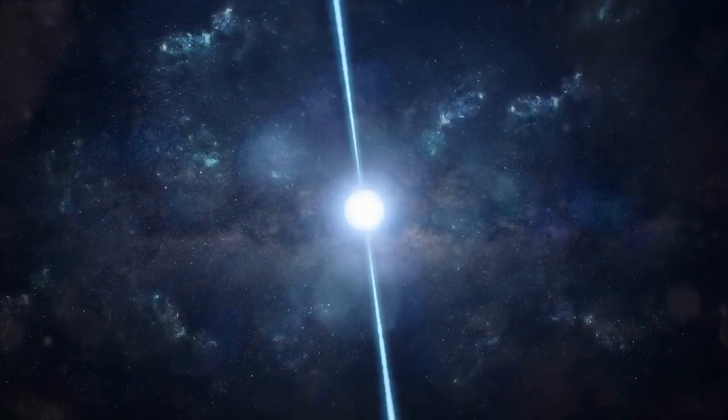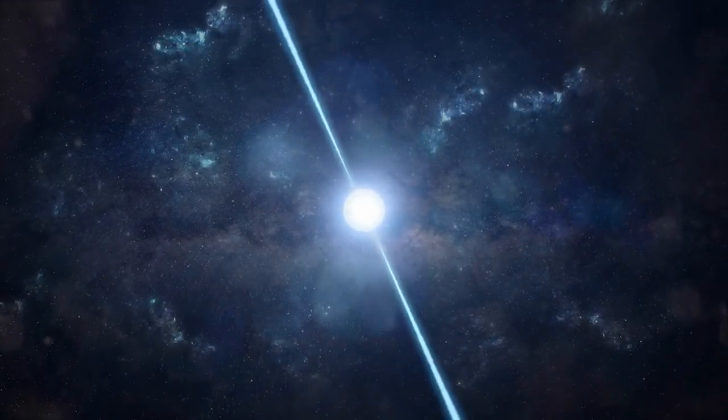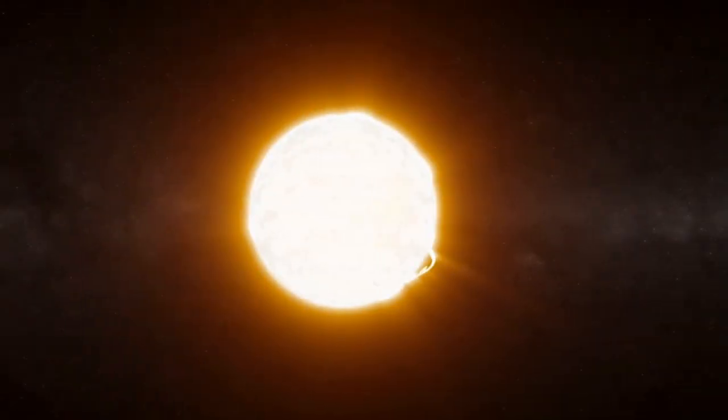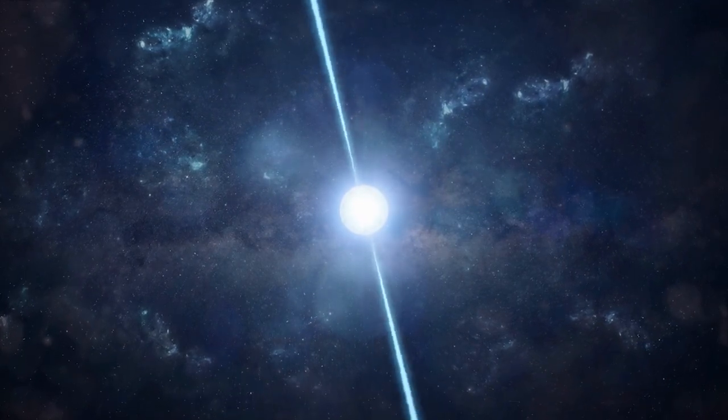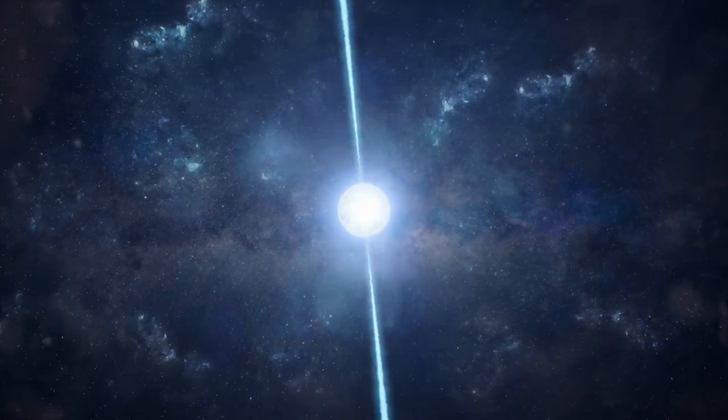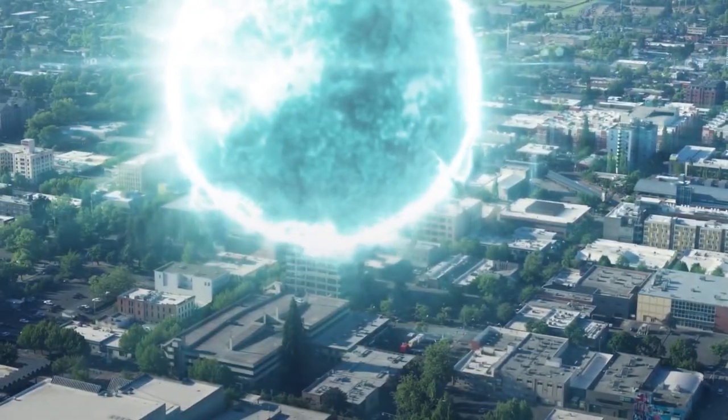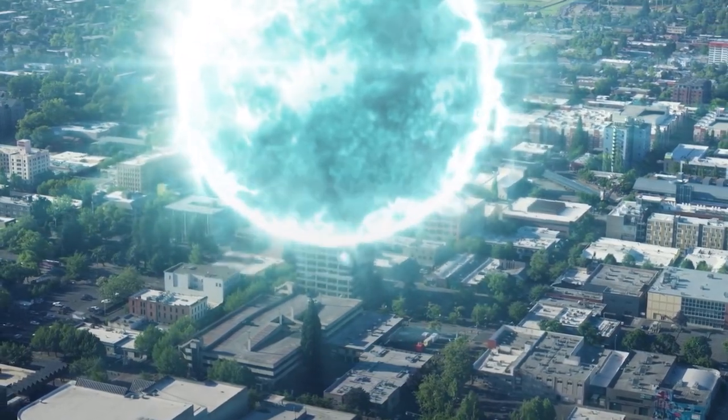A neutron star is a stellar object that is both astonishingly enormous and small. Despite having at least 1.4 times the mass of our sun, pulsars are typically only 20 kilometers or 12 miles across. In essence, they are stars the size of little cities.